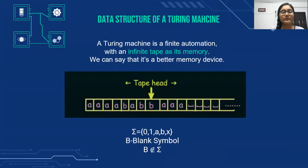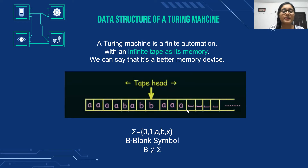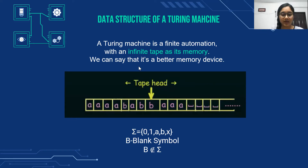Now I'm going to tell the basic data structure of a Turing machine, which consists of an infinite tape as its memory. As we can see in this figure, this tape goes infinitely long and it consists of many infinite symbols and also blanks. That is why we can say that it is a better memory device.